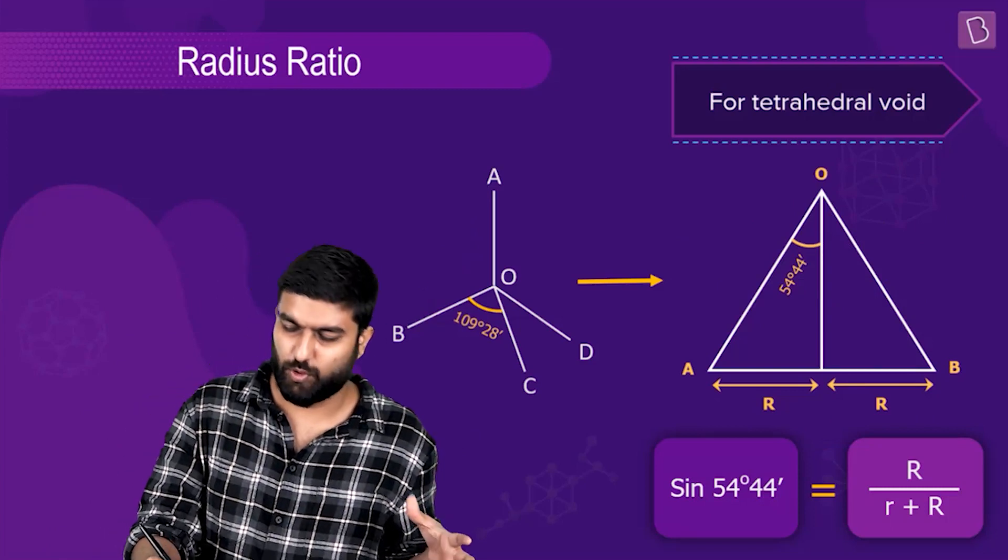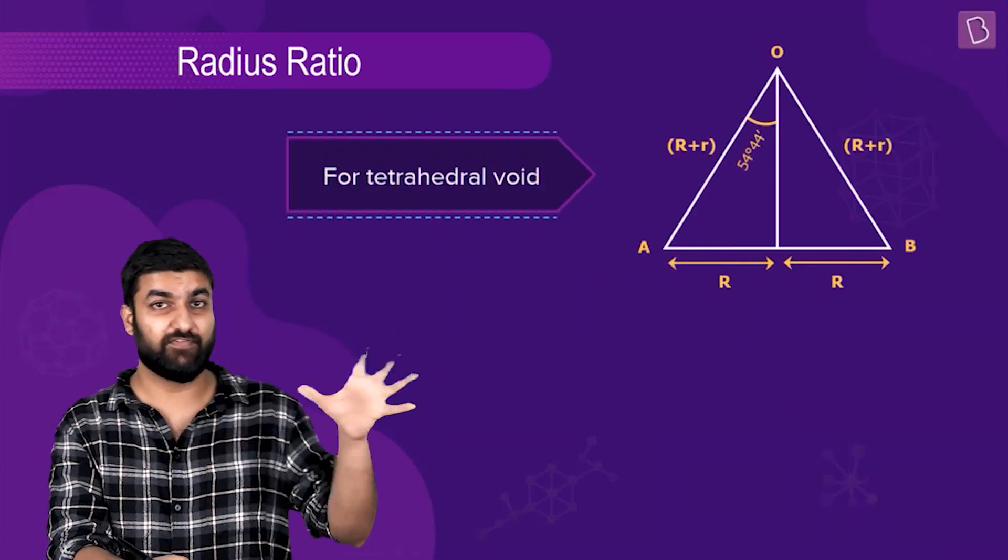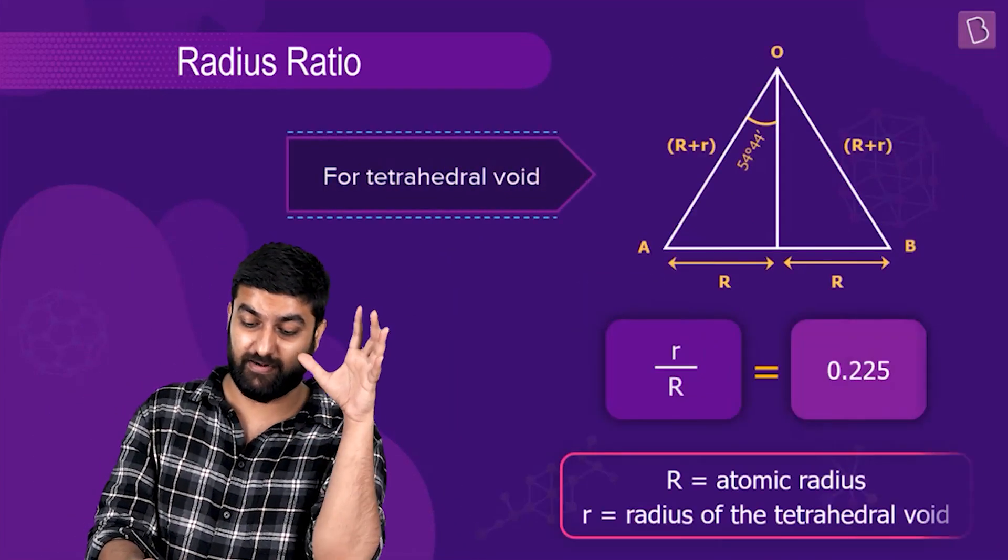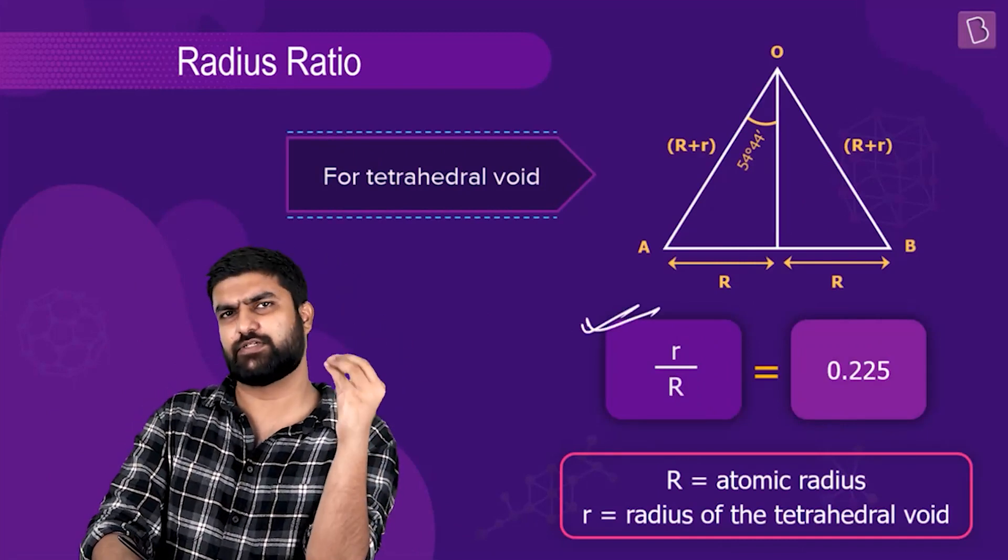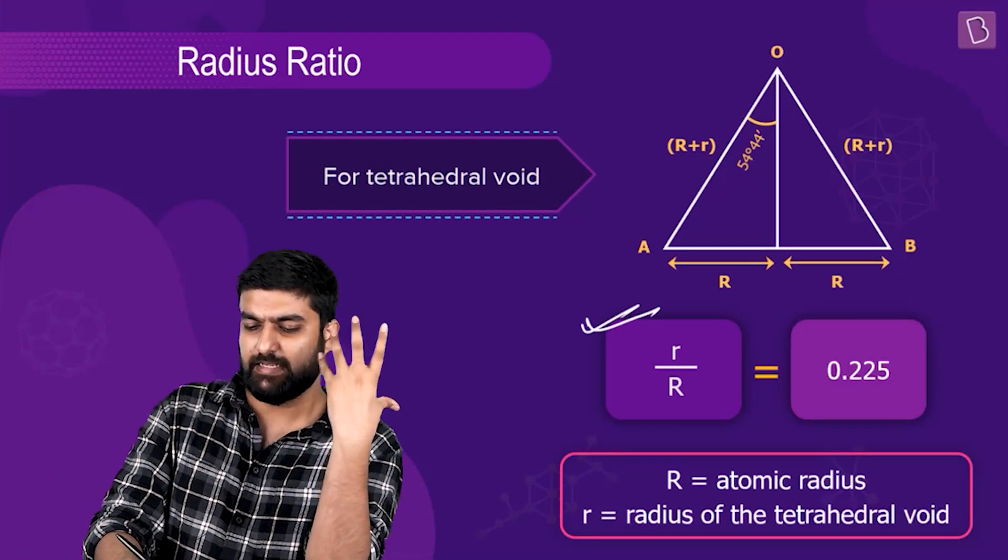Small r by capital R is equal to 0.225. Remember this value.